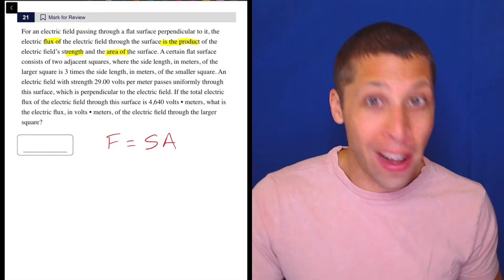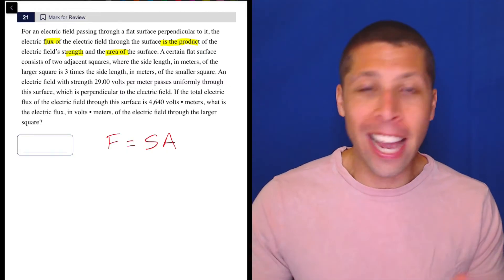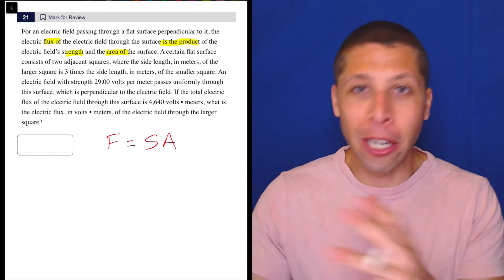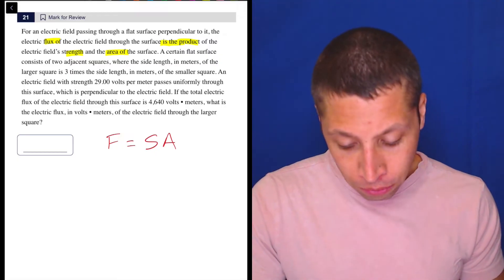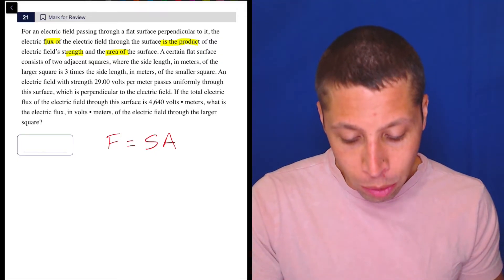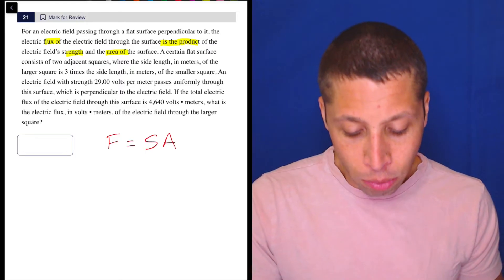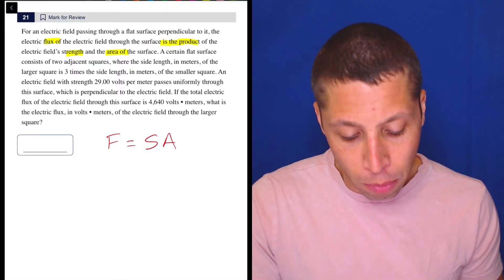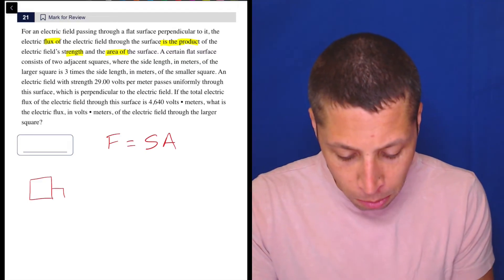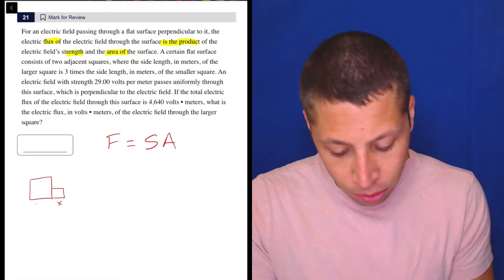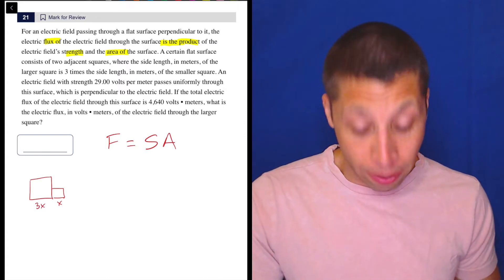I just am following instructions and I'm trusting that in the end, I'm going to have a nice Lego pirate ship or an Ikea bookcase. It's going to work out. So then we continue. A certain flat surface consists of two adjacent squares where the side length in meters of the larger square is three times the side length in meters of the smaller square. So I'm just going to draw two squares. There's one. There's a smaller square. One is X. One is three X. That's all I really get from that.